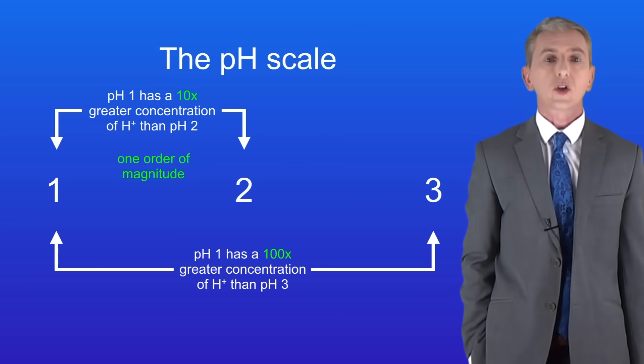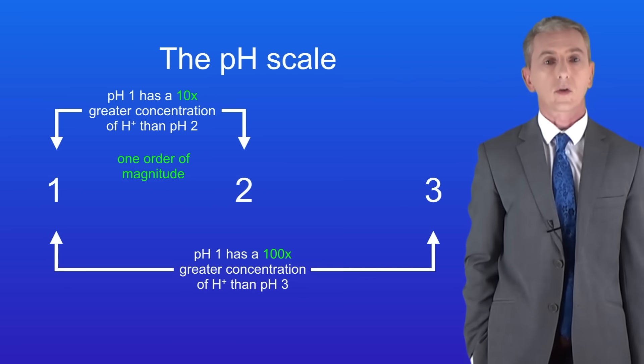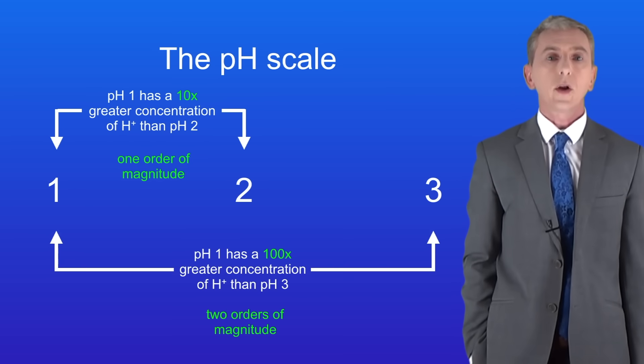If we compare pH 1 with pH 3, we can see that pH 1 has a 100 times greater concentration of hydrogen ions than pH 3. A 100 times difference is called two orders of magnitude.